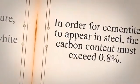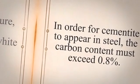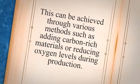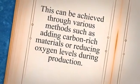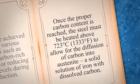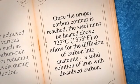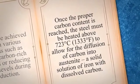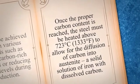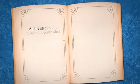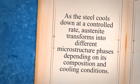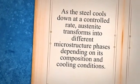In order for cementite to appear in steel, the carbon content must exceed 0.8%, achieved by adding carbon-rich materials or reducing oxygen levels during production. Once the proper carbon content is reached, the steel must be heated above 723 degrees Celsius (1333 degrees Fahrenheit) to allow for the diffusion of carbon into austenite, a solid solution of iron with dissolved carbon. As the steel cools at a controlled rate, austenite transforms into different microstructure phases depending on its composition and cooling conditions.